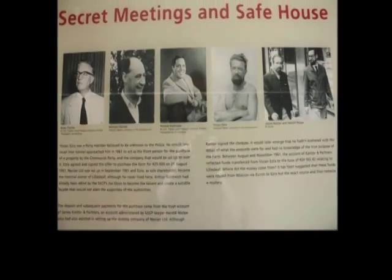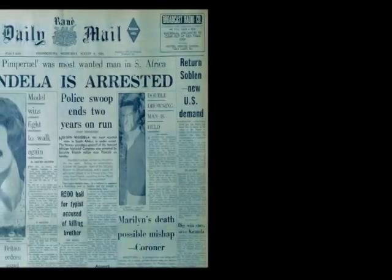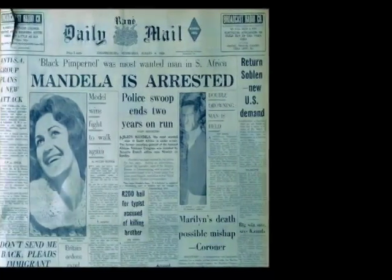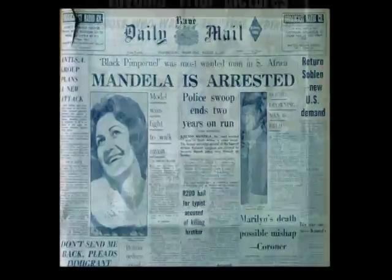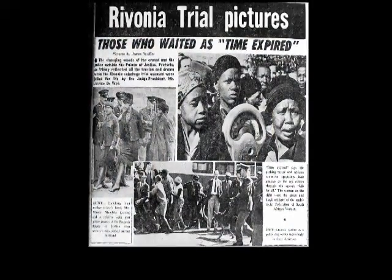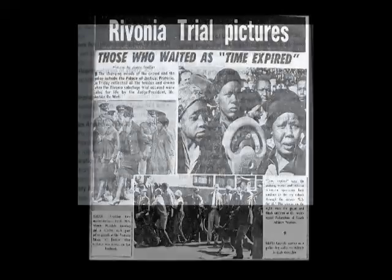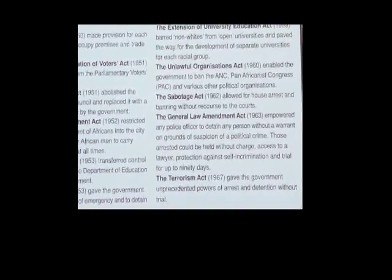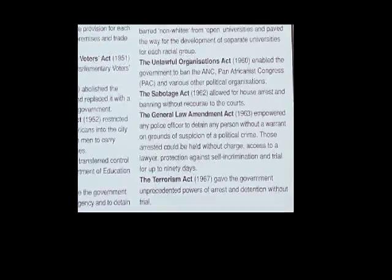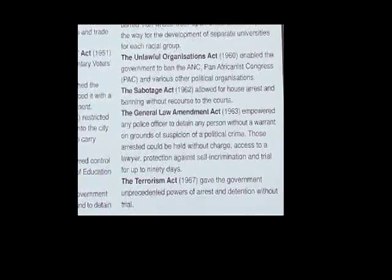Two years later, the Rivonia raid happened on July 11, 1963, which was a raid of the ANC hideout. Caught by surprise, the ANC leaders were easily arrested. Nelson Mandela had already been caught on August 5, 1962, and was currently serving five years in jail. The Rivonia trial began in October 1963, but the defendants were held under the General Law Amendment Act, which allowed a police officer to detain anyone for 90 days without trial or communication with a lawyer. Ten ANC members, including Nelson Mandela, were accused of 221 acts of sabotage.